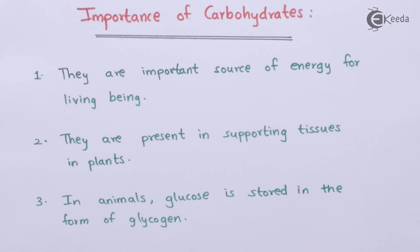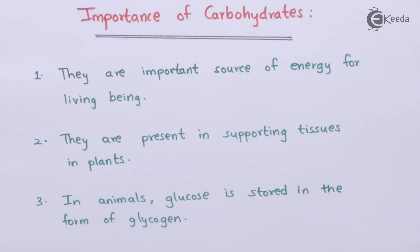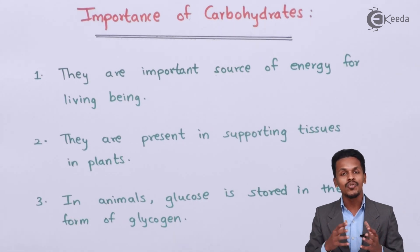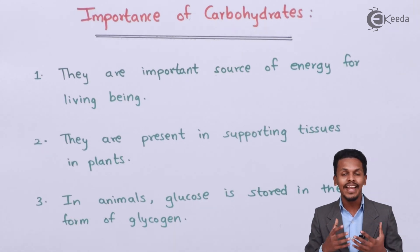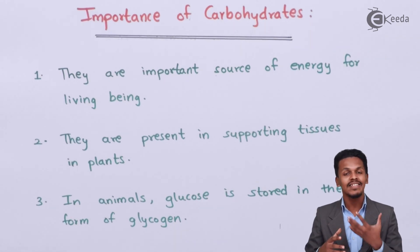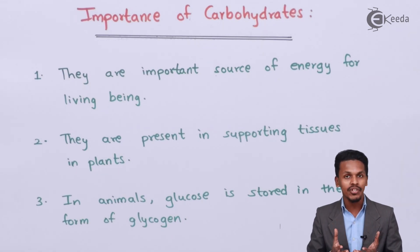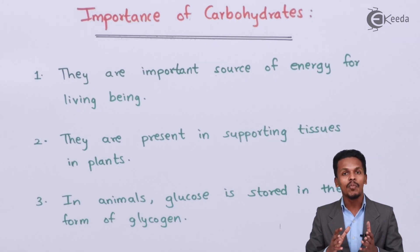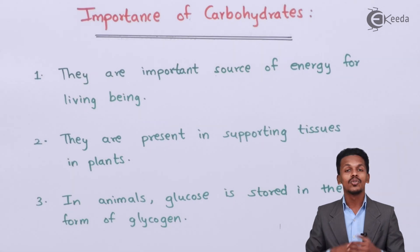In animals, glucose is stored in the form of glycogen. Glycogen is also a carbohydrate in which glucose molecules are combined to form it. Glycogen plays a very vital role in storing energy, and that is how carbohydrates are very much important.